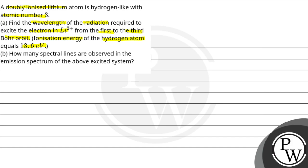Question B is: how many spectral lines are observed in the emission spectrum of the above excited system?